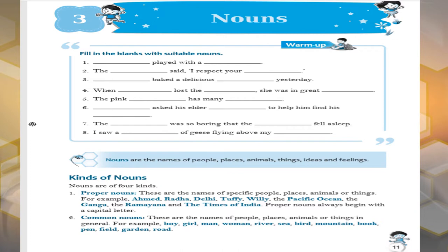Common nouns are the general names. General names means boy, girl, man, river, sea, any of them. Not a particular name.